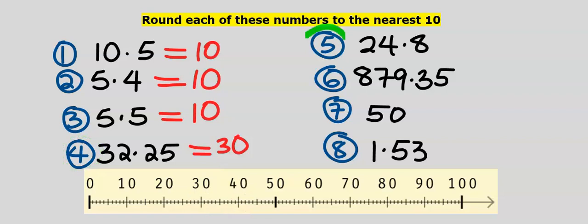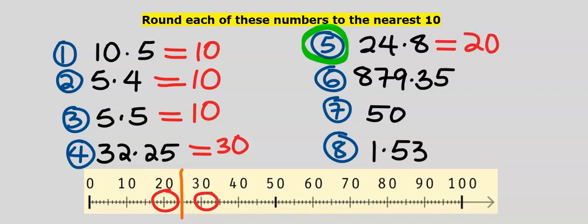Next, let's consider 24.8, which is between 20 and 30. Halfway between them is 25. 24.8 is not up to 25. Hence, it's going to be closer to 20 than to 30. Our answer is 20.